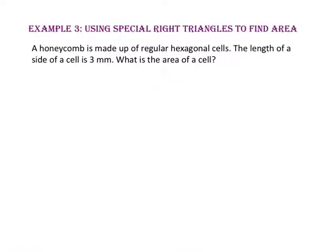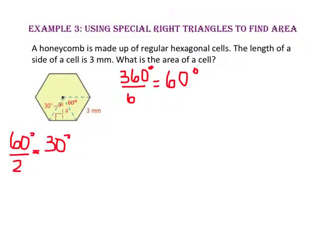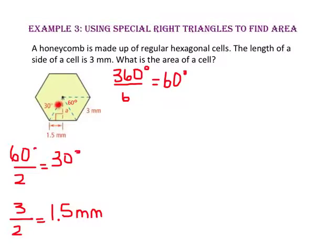In example 3, we will use special right triangles to find area. A honeycomb is made up of regular hexagonal cells. The length of a side of a cell is 3 millimeters. What is the area of a cell? Starting by drawing a hexagon with side 3 and putting in a few radii — in a regular hexagon we have 6 congruent isosceles triangles, so the 6 vertex angles form 360 degrees, making each vertex angle 60 degrees. When we draw in the apothem, it divides the 60-degree vertex angle into two 30-degree angles. The apothem also divides the 3-millimeter side length into two congruent parts of 1.5 millimeters.